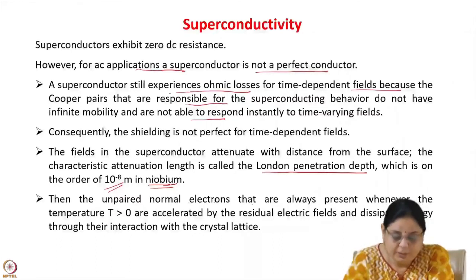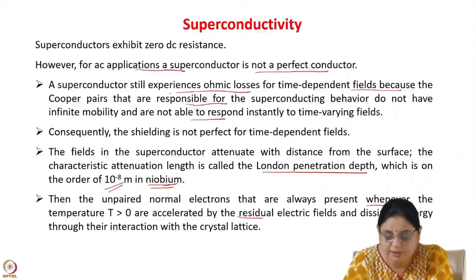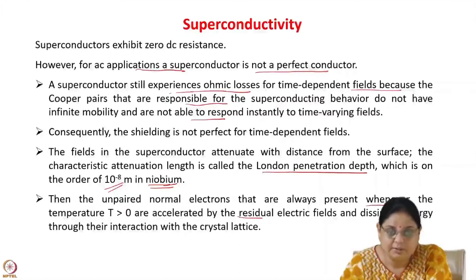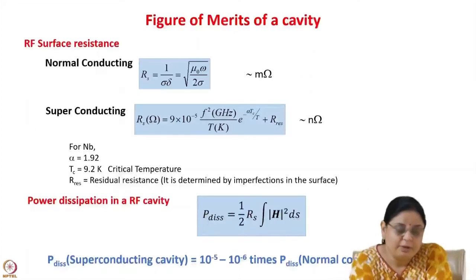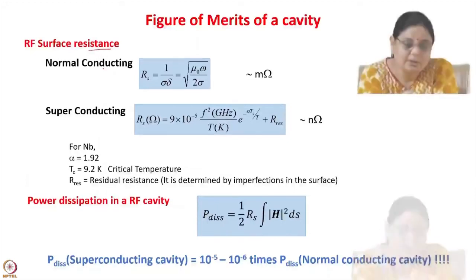The fields in the superconductor attenuate with distance from the surface, and this characteristic attenuation length is called the London penetration length, which is of the order of 10⁻⁸ meters in niobium. Niobium is generally used for making superconducting cavities. The unpaired normal electrons, always present whenever the temperature is greater than 0, are accelerated by residual electric fields and dissipate energy through their interaction with the crystal lattice.